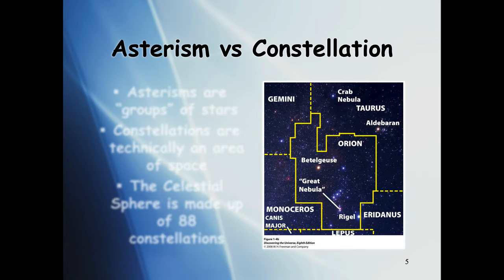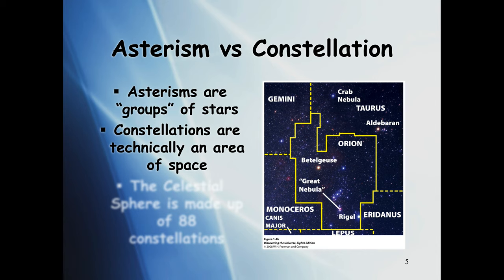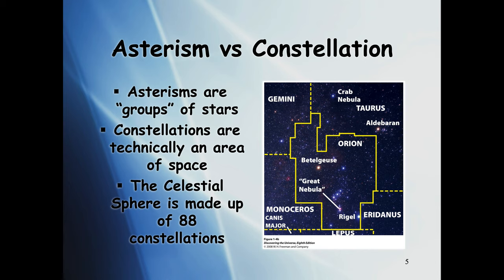So the term asterism and constellation, those are terms that we should be familiar with as well. Just to review real quickly, an asterism, it's the group of stars. If we looked at Canis Major, the big dog that's easily found from following Orion's belt down, that's an asterism. It's a group of stars. And a lot of times, you use the term constellation instead of when you really mean asterism.